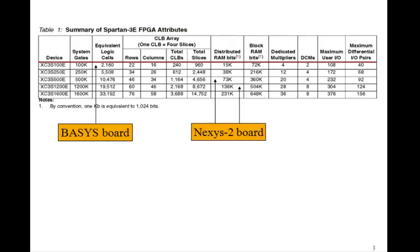Or in this case ROMs, where you store fixed values in there. This is called distributed RAM. In the table from an earlier lesson, the distributed RAM bits are listed for the various Spartan 3 parts. For the Spartan 2 board, the 500k one for example, has 73k bits of distributed RAM that you can use. This corresponds to over 9,300 bytes of RAM.